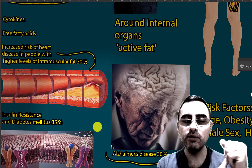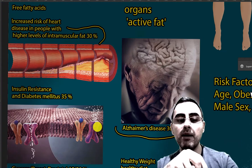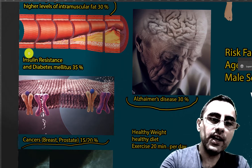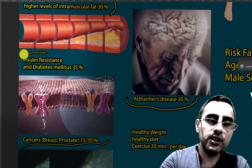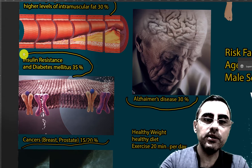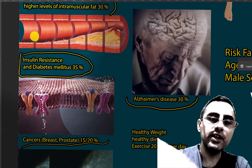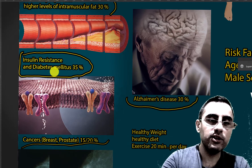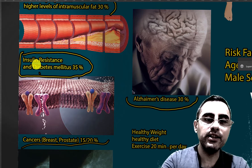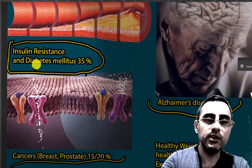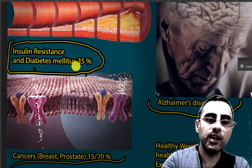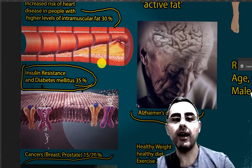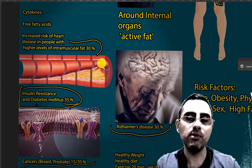We all know that obesity increases the risk of Alzheimer's disease, cardiovascular disease, and type 2 diabetes. But intramuscular fat deposition increases this risk further, independently. For example, it increases insulin resistance and type 2 diabetes risk by 35%, which is quite high.